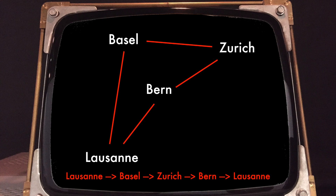With four cities, it's easy to test all possible tours. After all, assuming that we must start from Lausanne, the number of tours is the number of orderings of the three cities. There are six orderings of three cities. The trouble is what happens as there are more and more cities.